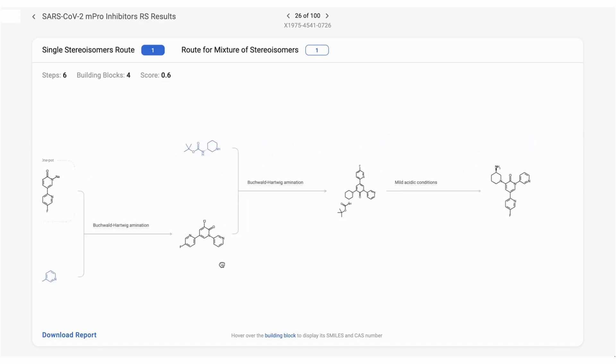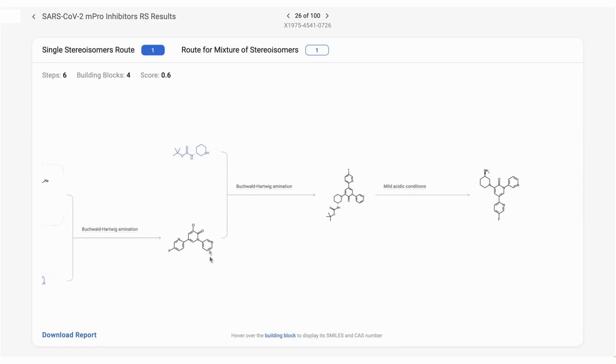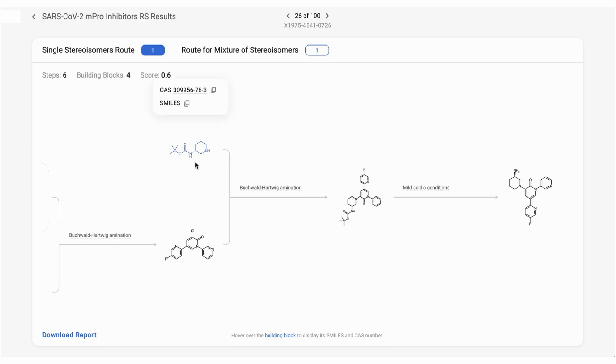For the subsequent cross-coupling step, a chiral building block with a protecting group is identified. This prevents the other amine from participating in the reaction. Finally, the protecting group is removed under acidic conditions to deliver the final compound.